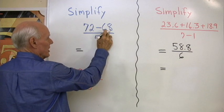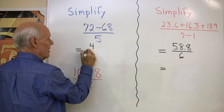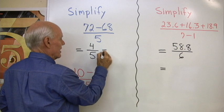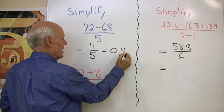So you say 72 minus 68 is going to be 4 divided by 5. So the answer is 4 fifths, or if you wanted to write it as a decimal, 0.8.